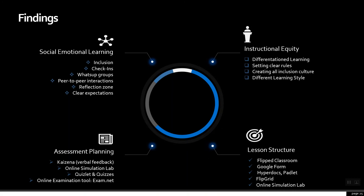For assessment planning: instead of written feedback, we can use Kaizena verbal feedback. While students cannot access labs, they can utilize online interactive simulation labs. For formative assessments, we may utilize Quizlet and other formative assessment tools. For summative exams, we will use exam.net. The lesson structure can follow a flipped classroom model — students read and watch videos at home, then discuss in class. We will utilize Google Forms, HyperDocs, Padlets, and Flipgrid, where students respond using video and can also respond to other students' videos. We will also utilize online simulation tools.